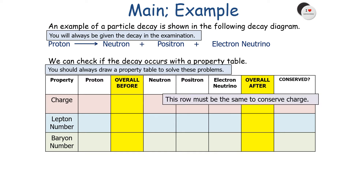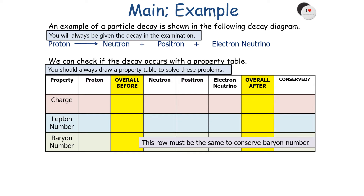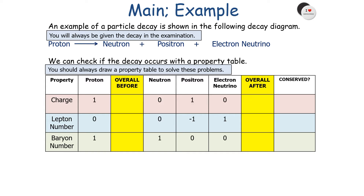In the top row, we consider if charge is conserved — the overall before must equal the overall after. Next, we look to see if the lepton number is conserved, so the overall number before must equal the overall number afterwards. On the last row, we consider if the baryon number is conserved. All rows must be conserved for a decay to take place. Placing our values in for each particle in the decay — proton, neutron, positron, and electron neutrino — we tabulate the overall before and after and check if values are conserved. The charge before is 1 and after is 1: conserved. Lepton number before is 0 and after is 0: conserved. Baryon number before is 1 and after is 1: conserved.